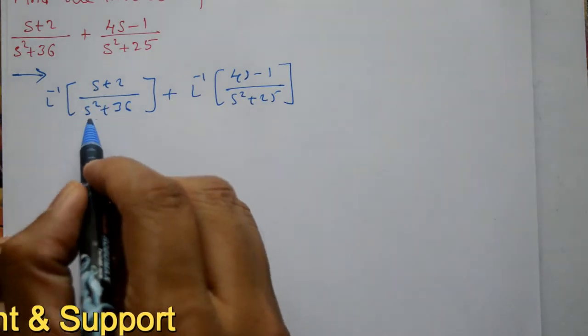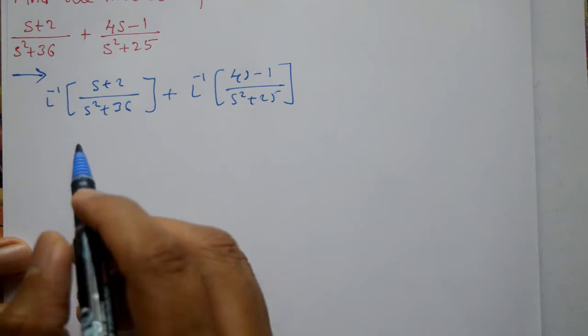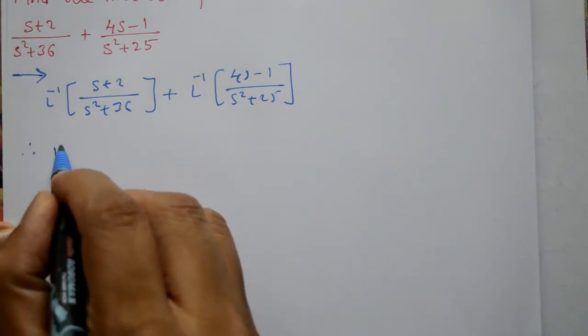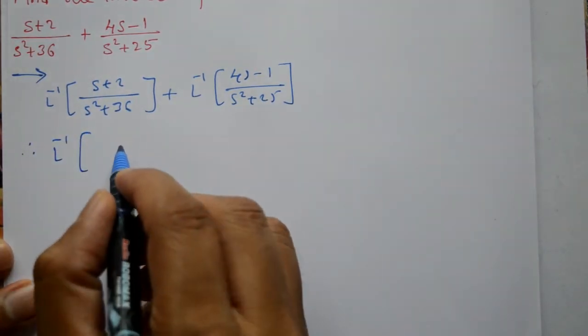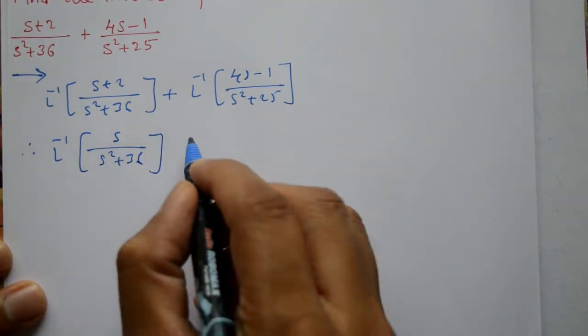Now separate s plus 2: s and 2. Therefore, inverse of s by s squared plus 36, plus 2 is a constant take outside: 2 times inverse of 1 by s squared plus 36.